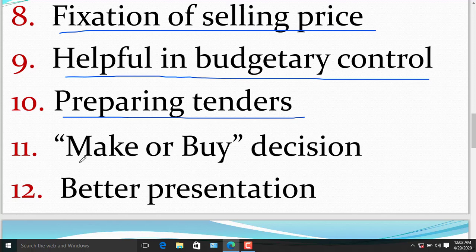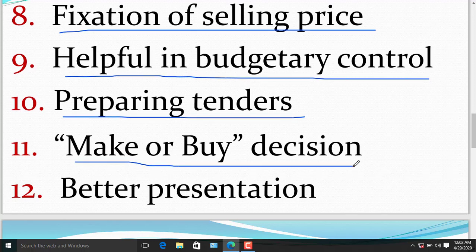The eleventh benefit of marginal costing is make or buy decision. Sometimes, a decision has to be made whether to manufacture a component or product or to buy it ready-made from the market. The decision to purchase it would be taken if the price paid recovers some of the fixed expenses.